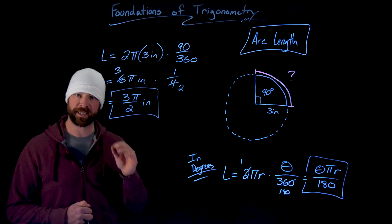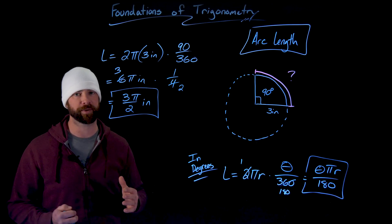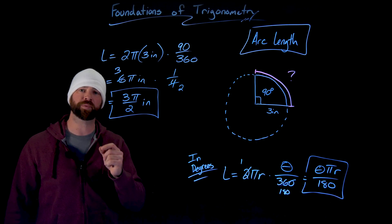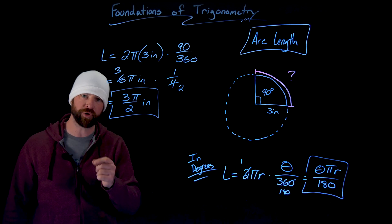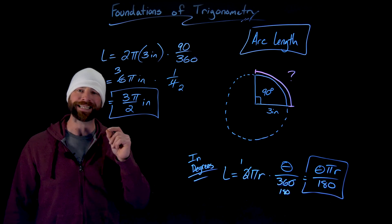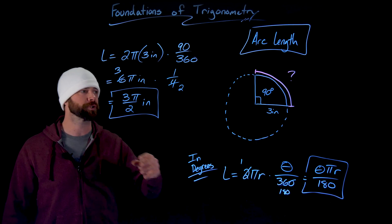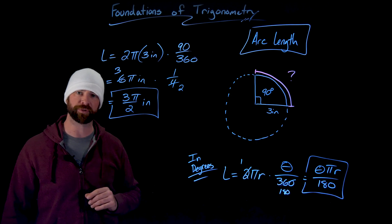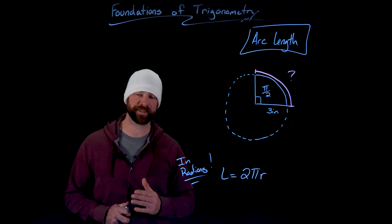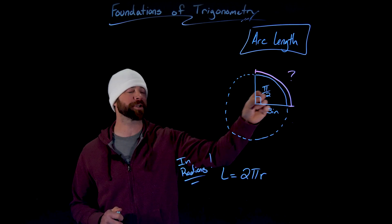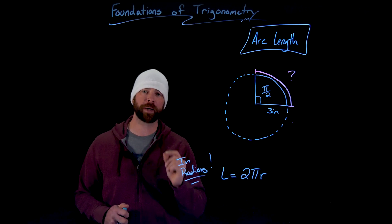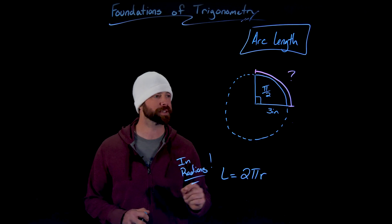Let's now do the exact same problem but in radians. You're going to see the first instance where it becomes extremely clear why radians are more powerful and easier to use when dealing with angles on circles. We have the same setup, but now instead of writing the interior angle as 90 degrees, I wrote it as π over 2 radians.